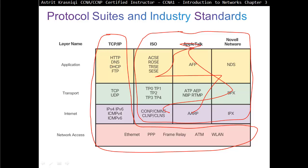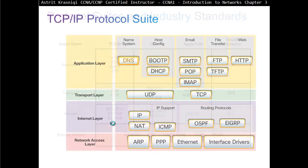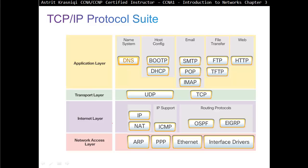At the application layer we have protocols including HTTP, DNS, DHCP, and FTP. DNS — Domain Name System — converts or translates names to IP addresses. You give it a name and it gives you an IP address. You can also give it an IP address and it converts it to a name. But usually we remember names, not numbers — for example, www.bbc.co.uk. DNS will resolve that to an IP address.